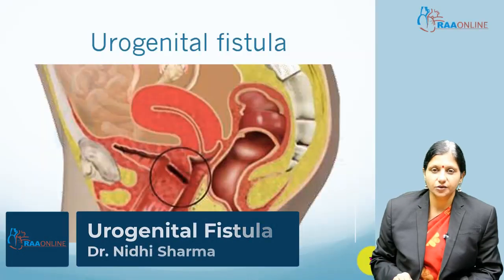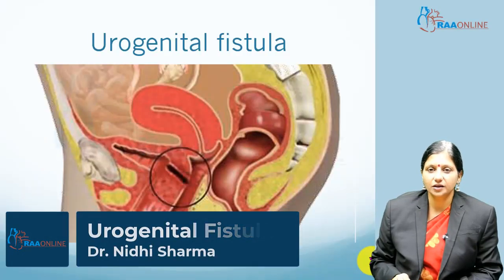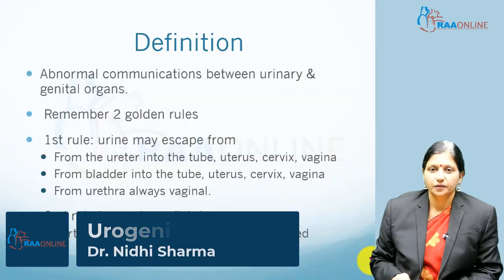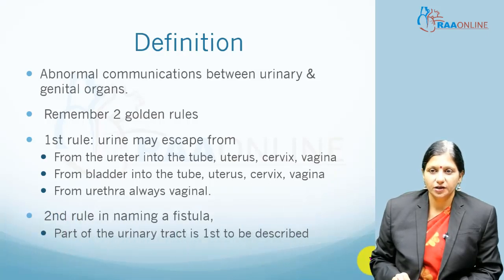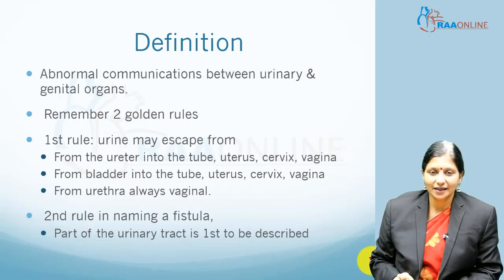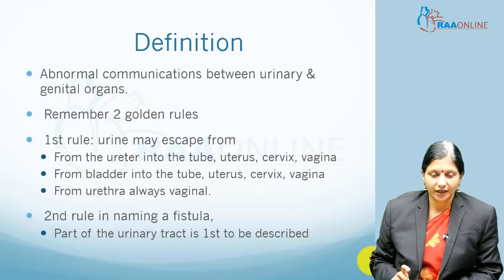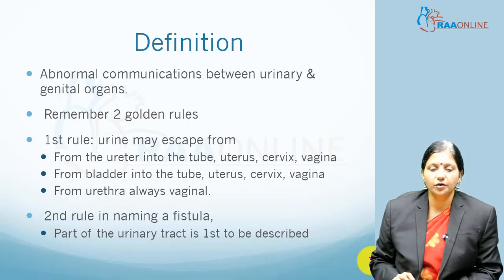Welcome to RAW Online. Today's topic is urogenital fistulas. A fistula is defined as an abnormal communication between urinary and genital organs. Urine can escape from the ureter into the tubes, uterus, cervix, or vagina. It can leak from the bladder into the tube, uterus, cervix, and vagina, and from the urethra the communication is always into the vagina, because of the anatomical arrangement.